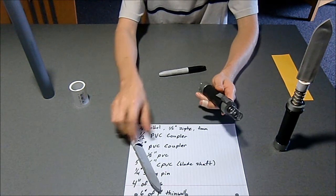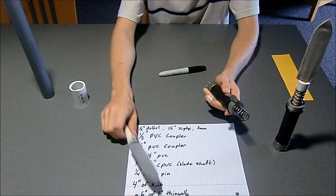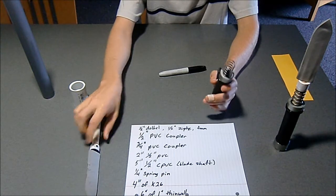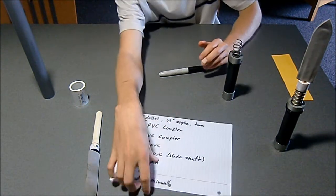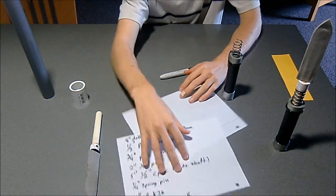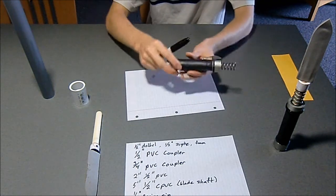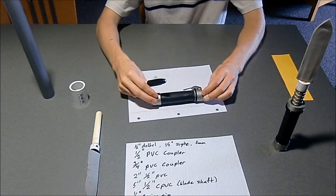There's two main components: the handle and then the blade and shaft. This is a list of parts, I'll also put that in the description. The handle is made up of, let's start on the outside.